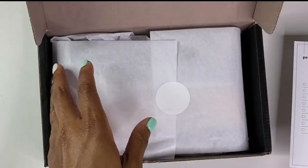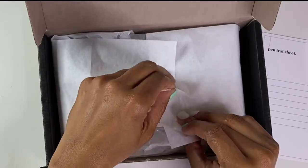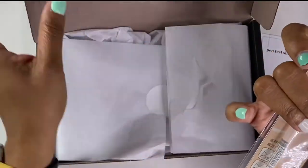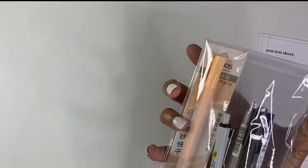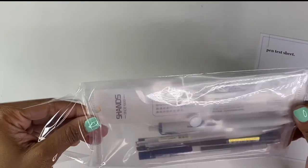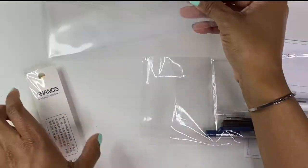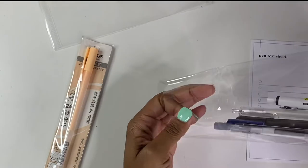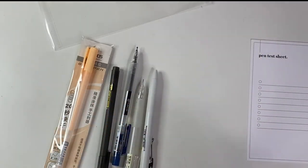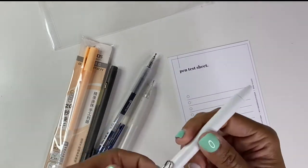And then of course we have our pen test sheet on the back. Inside the box we have our pens. So as always it comes with this super cute little clear pouch, and then you have one, two, three, four, and five. Looks like they might all be pens this time, so five different pens.